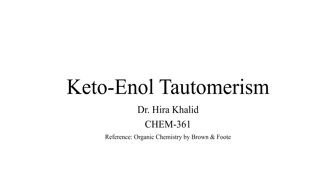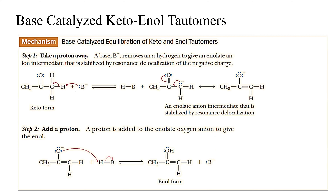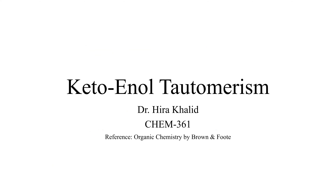Now we are going to start keto-enol tautomerism. From the name you can get an idea: 'keto' is related to the ketone functionality, 'en' is for alkenes — the double bond — and 'ol' is for alcohols. Tautomerism is a process of interconversion of tautomers, which are constitutional isomers of two compounds that readily interconvert between one another.